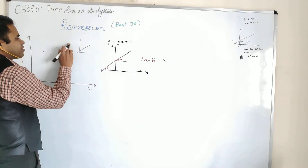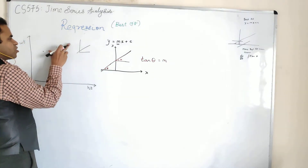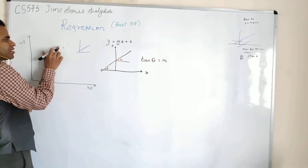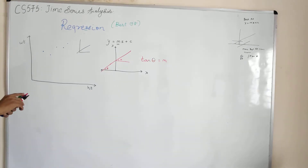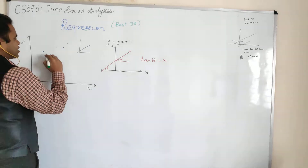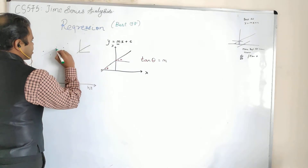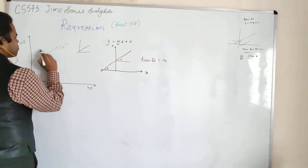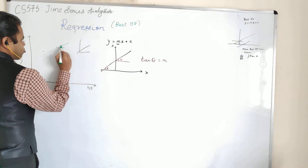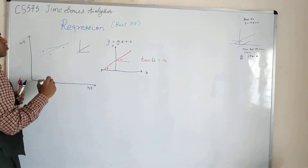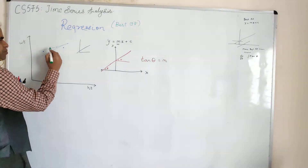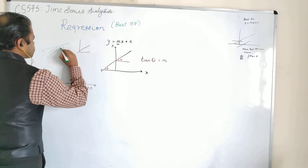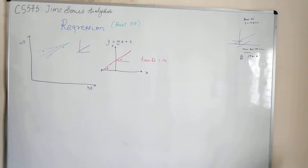Sometimes a line that fits certain points may not cover others. You may try to fit three points, then two points are missing. You may try to cover those two points, then other points are missing. So there are multiple possible lines. For example, one particular line covers only one point. Another line covers two points but misses others — because from that line, some points are very far away.